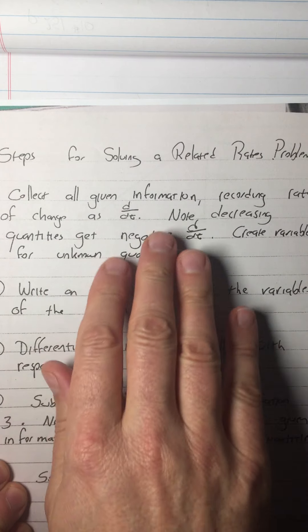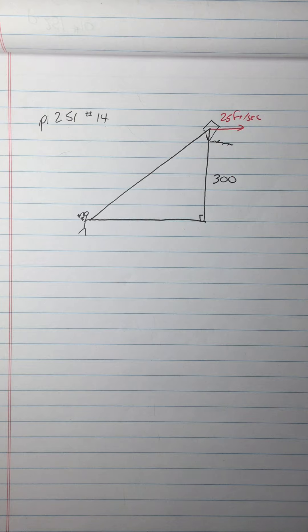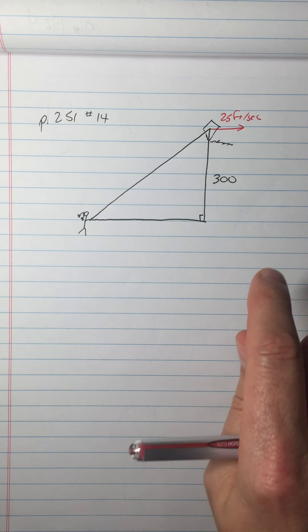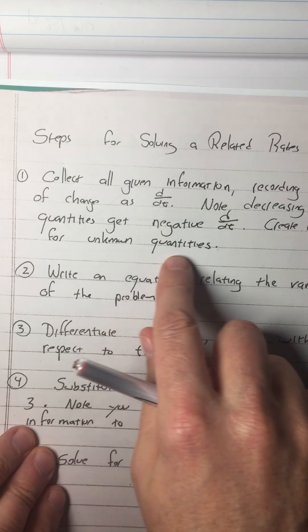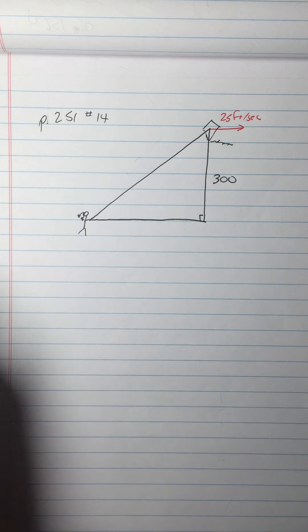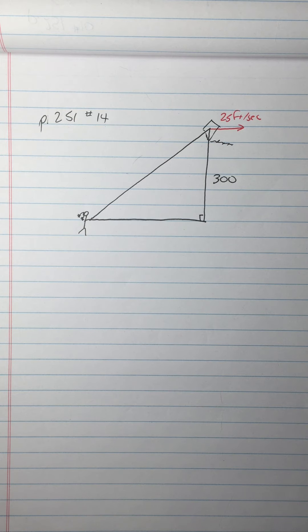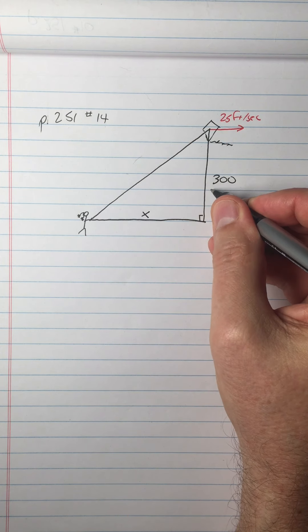Now it says the wind is carrying the kite horizontally away. So the kite is moving this way. Now let's go ahead and put on, it says 25 feet per second. All right, what I'm doing at this point is drawing my picture, and that's really part of collecting all the given information. Part of the given information is the geometric layout.